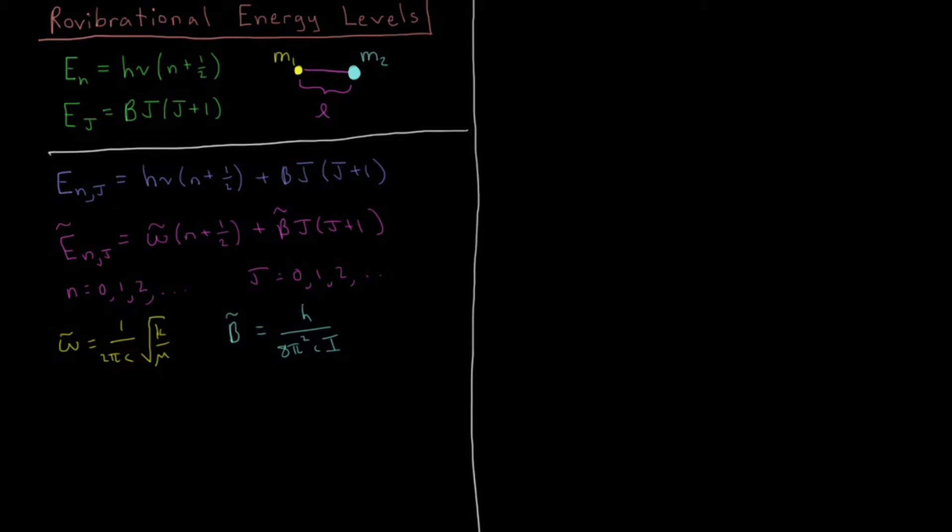And just to go all out on this, let's further remind ourselves that the reduced mass mu is equal to m1 times m2 over m1 plus m2, being the masses of each of the individual atoms. And our moment of inertia here, i from the rotational part, equals mu l squared.